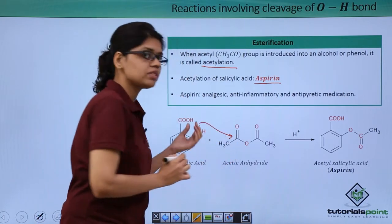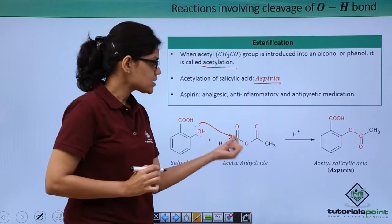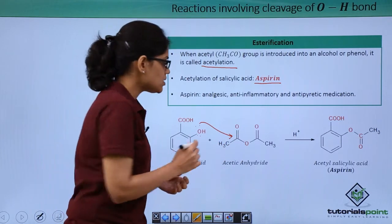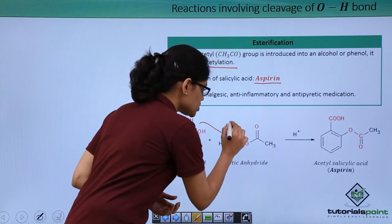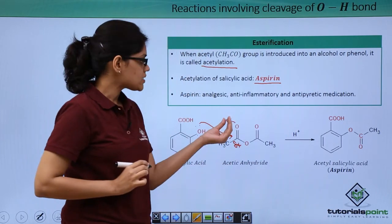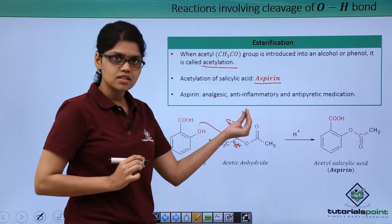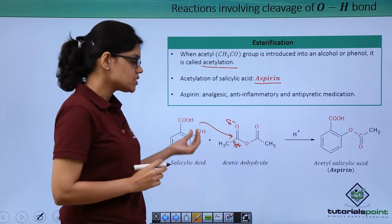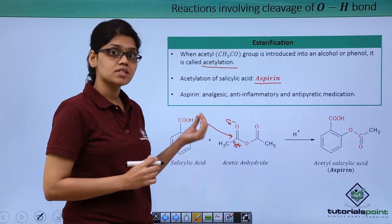Why is that? Because here we have a delta positive charge and delta minus here, as oxygen pulls the electron towards itself making this carbon an electrophilic center. When this oxygen, or the lone pair of electrons in this oxygen, attacks this carbon, the bonds shift in such a way that now we have a CO-.